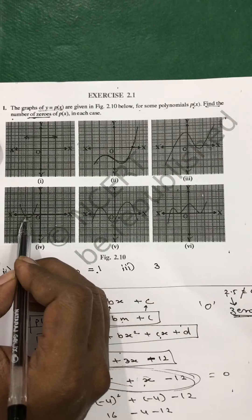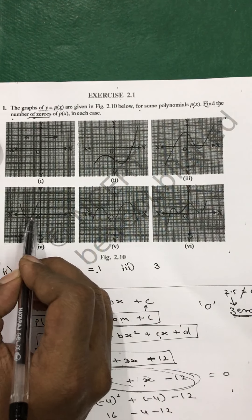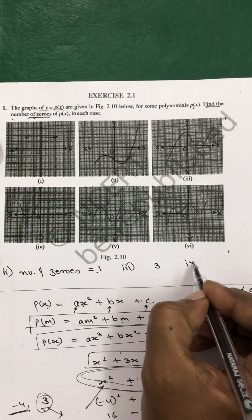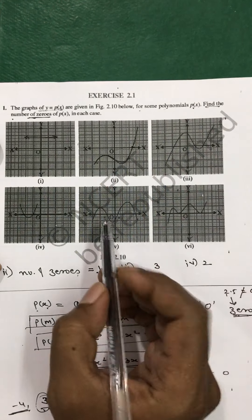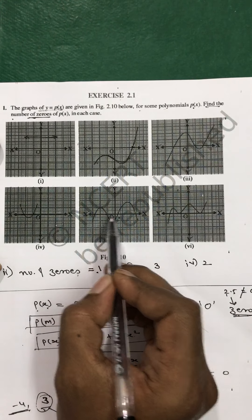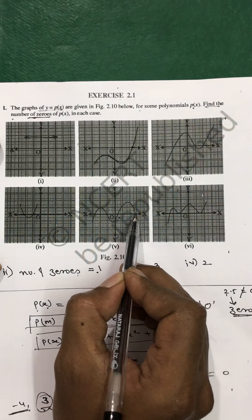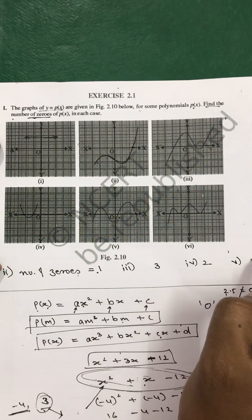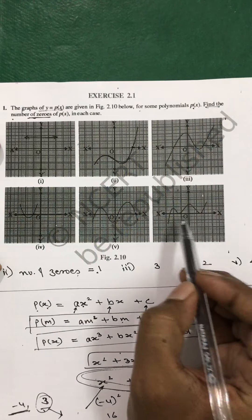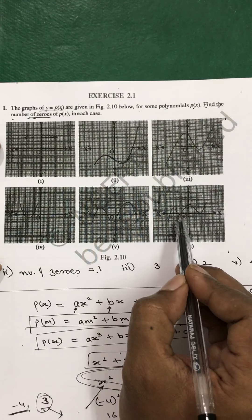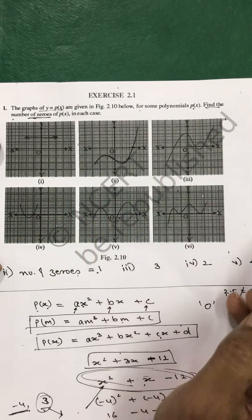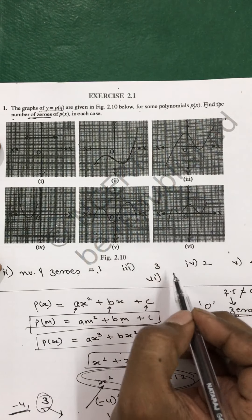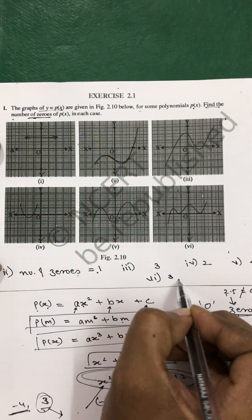For question 2, the graph is cutting the x-axis at two points, so the number of zeros is 2. For question 4 or 5, the graph is cutting at 1, 2, 3, 4 places, so the number of zeros is 4. And in the sixth question, it is cutting at 3 places, so the number of zeros is 3.